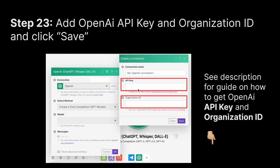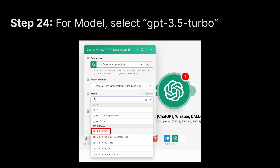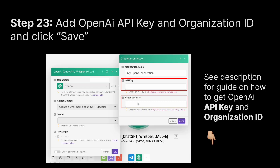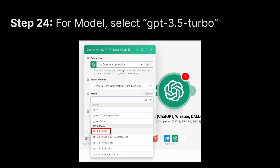Make will prompt you to provide the API key as well as the organization ID for your OpenAI account. If you're unsure how to find those, check the guide linked in the description. Once you've added the API key and organization ID, click Save. You'll see the connection name appear, and then select the AI model — we'll be using GPT-3.5 Turbo.